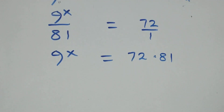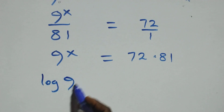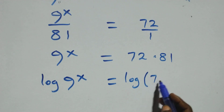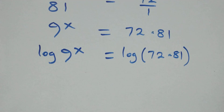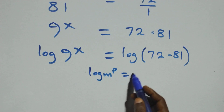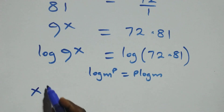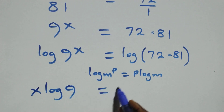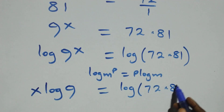The next step: we take the log on both sides. We have log of 9 raised to power x equals log of 72 times 81. We apply the power rule of logarithms: when we have log n raised to power p, this is the same thing as p times log n. So we have x log 9 equals log of 72 times 81.